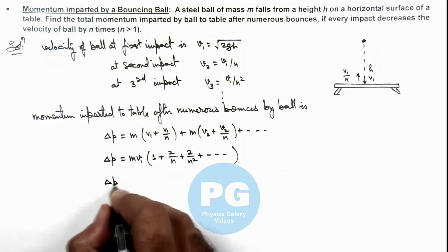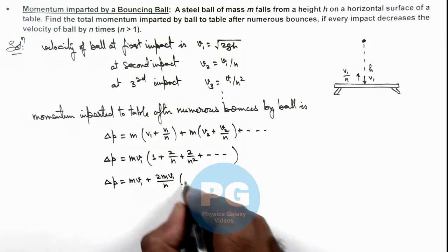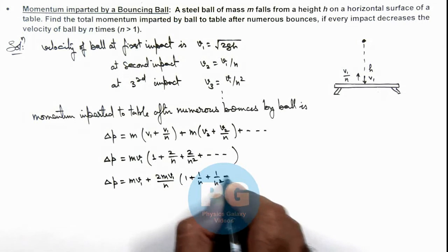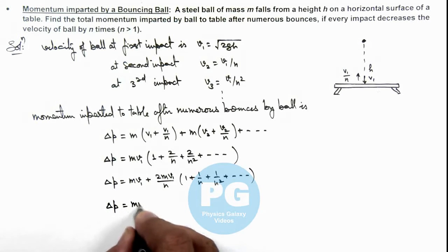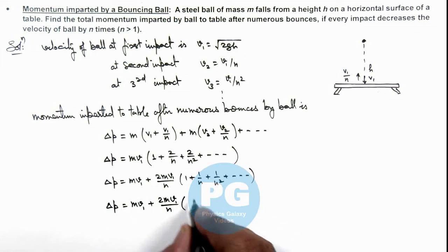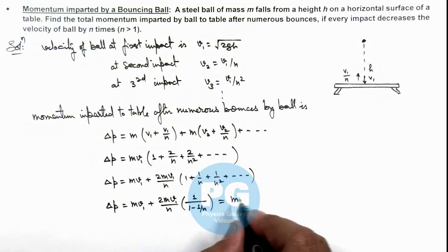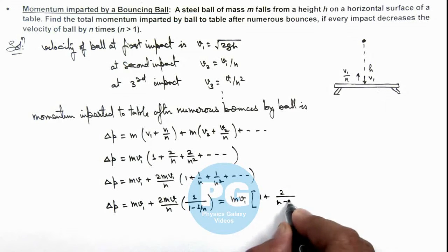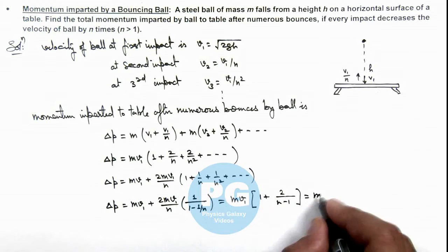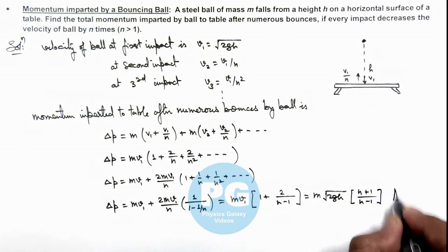For the converging GP, we can write delta p = mv1 plus (2mv1/n) multiplied by (1 + 1/n + 1/n² + ...). The sum of this converging GP gives delta p = mv1 plus (2mv1/n) multiplied by 1/(1 − 1/n). Simplifying, this gives mv1 times (1 + 2/(n−1)), which equals m√(2gh) · (n+1)/(n−1). This is the final result of this problem.